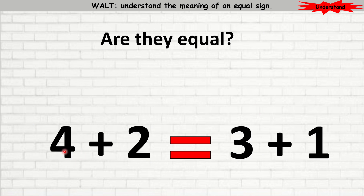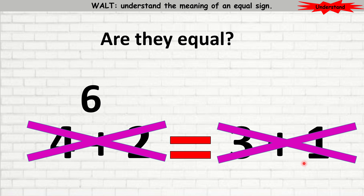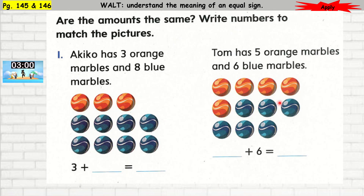Let's try another example. Here's 4 plus 2: add 2 more, that is 6. I'm going to write 6 on the top. Then I go to the right-hand side: 3 plus 1. 3 plus 1 is 4. Is 6 equal to 4? The answer is no. They are not equal.